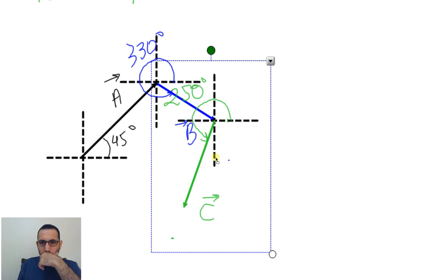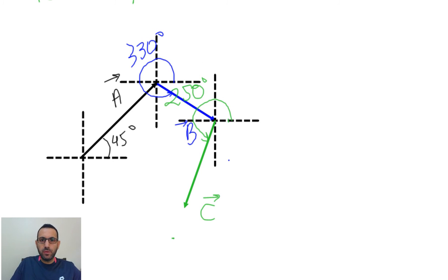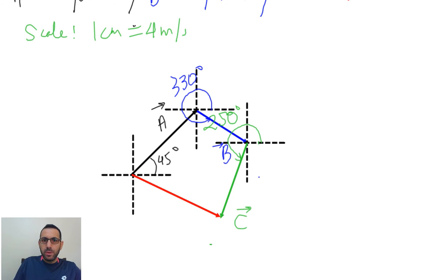Place C at the tip of B. Now the resultant of those three vectors is drawn from the tail of A to the tip of C. So this arrow from the tail of A here to the tip of C here — this is my resultant R.